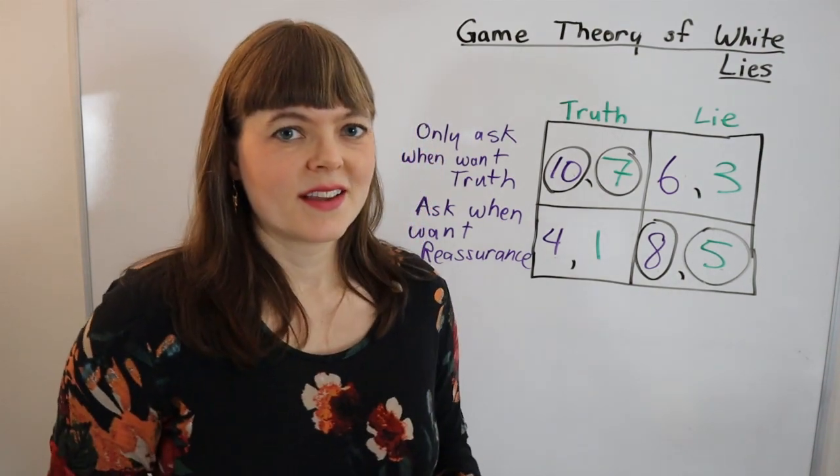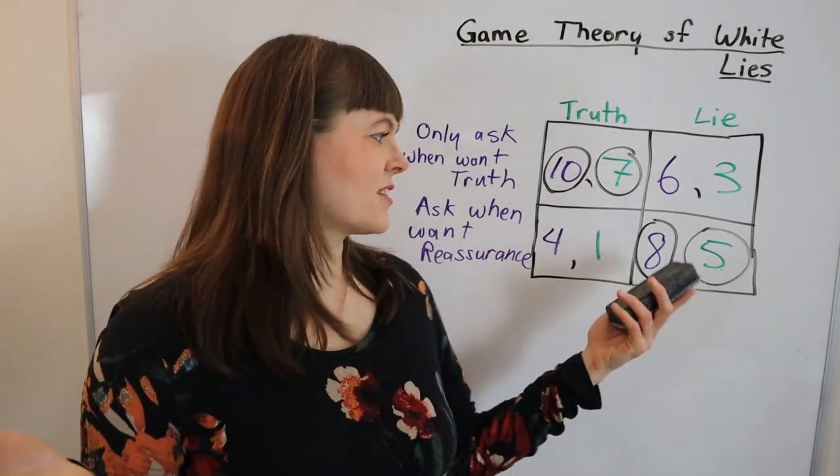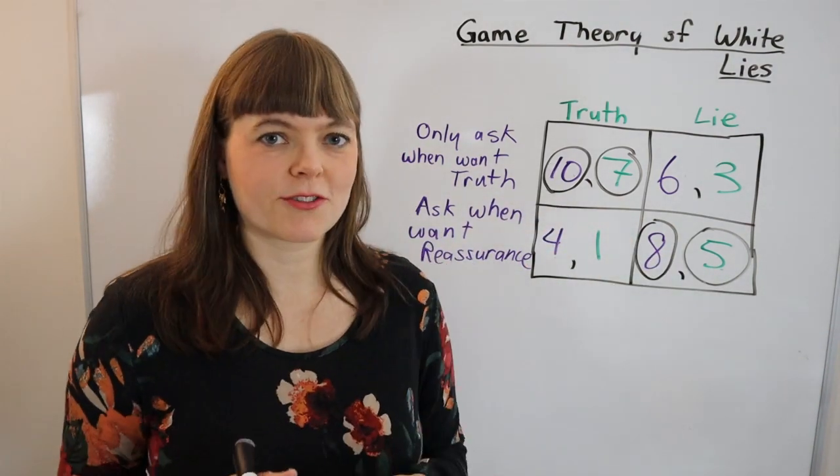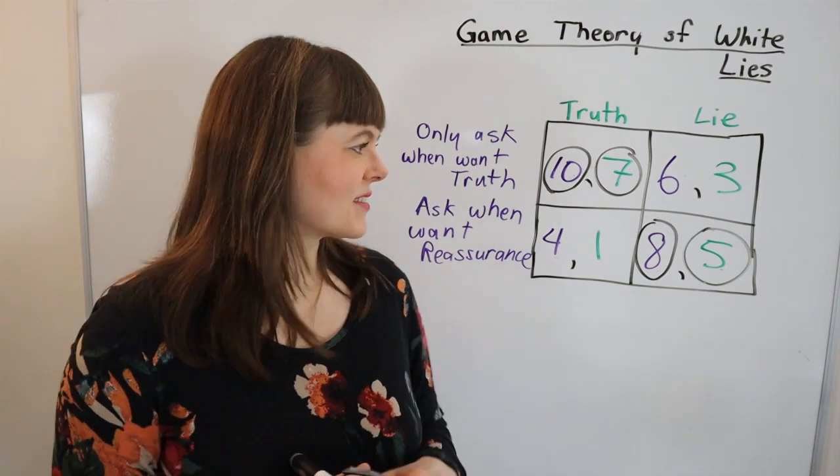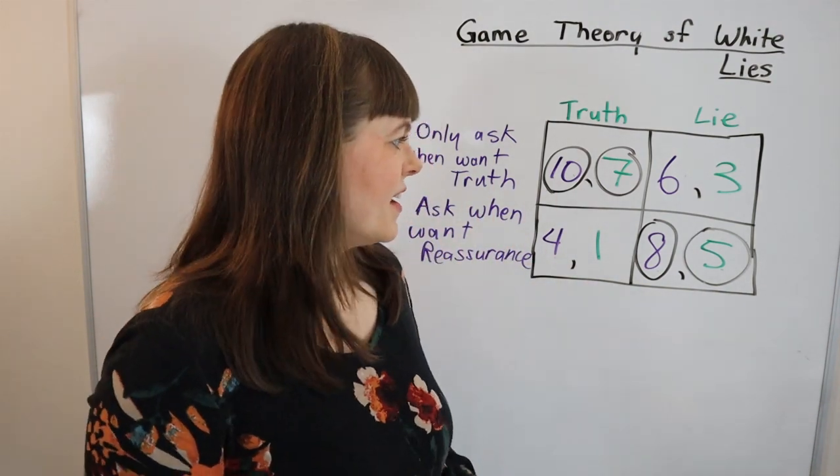So that's how you construct a game theory matrix from scratch - that's the game theory of white lies. So that's really the end of the process, it's not that complicated.